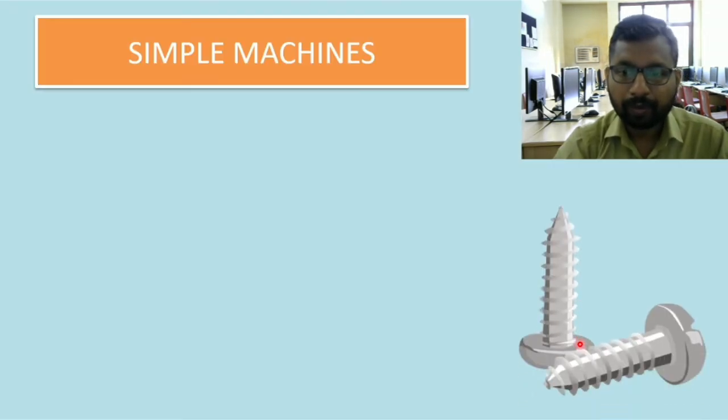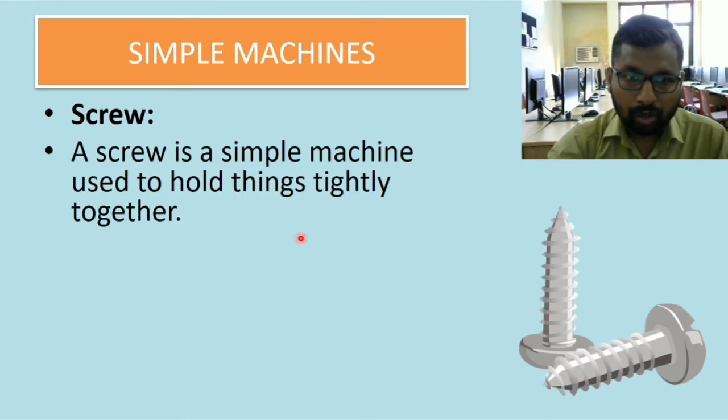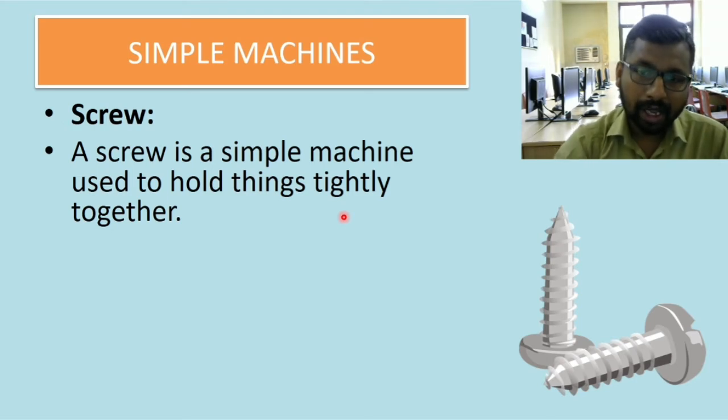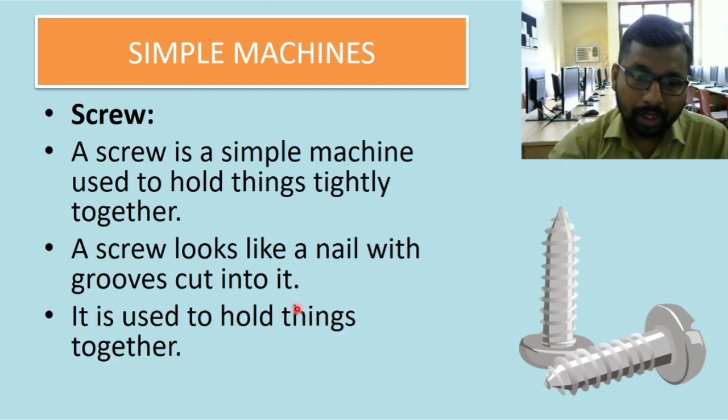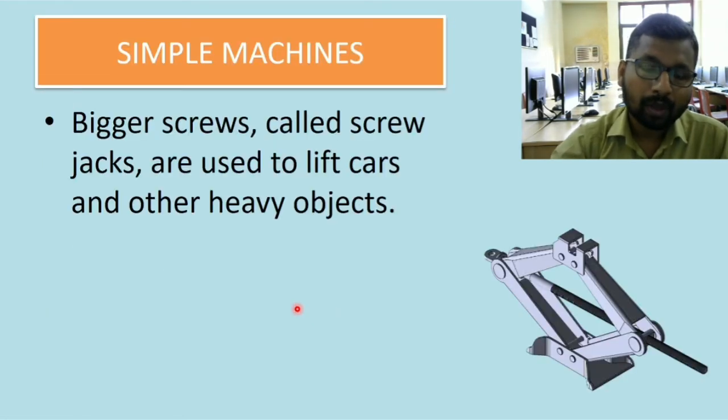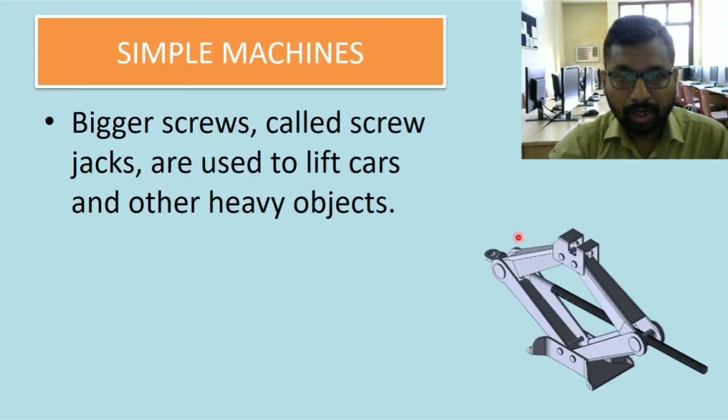Then here there is a screw, which is another kind of simple machine. It is used to hold things tightly together. It is better than a nail because a nail doesn't have grooves like this. A screw looks like a nail with grooves cut into it. It is used to hold things together.